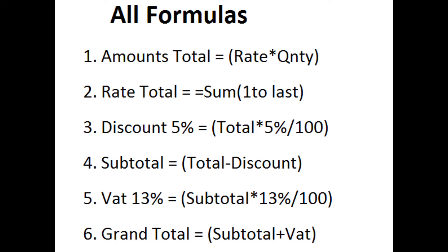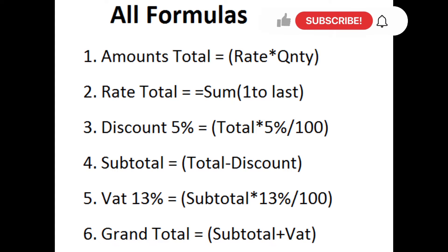One: amounts total is equal to rate asterisk quantity. Two: rate total is equal to SUM, one to last.